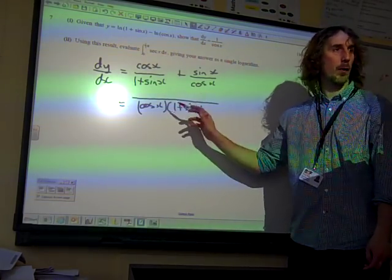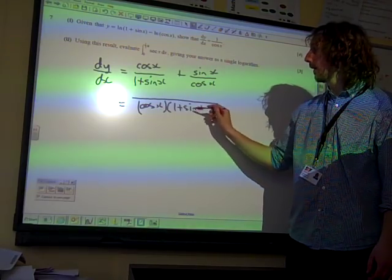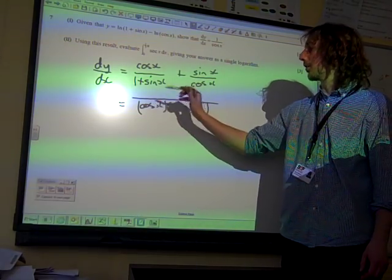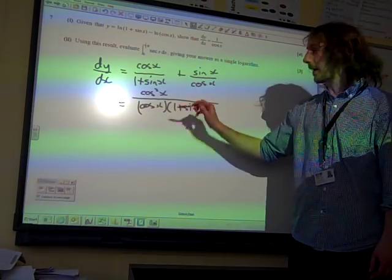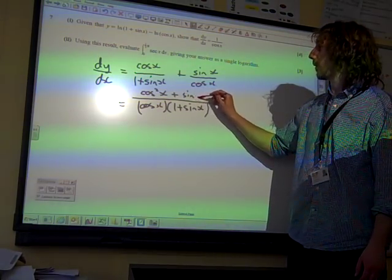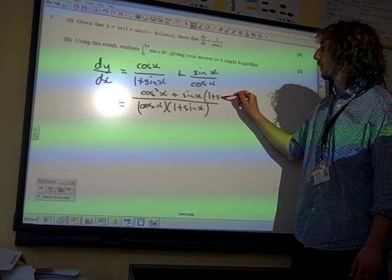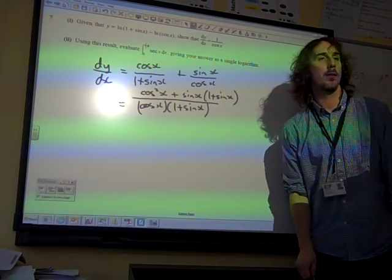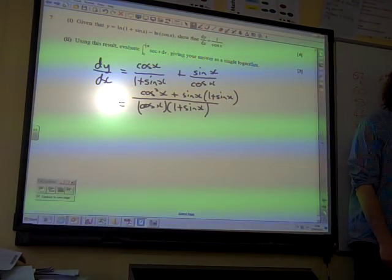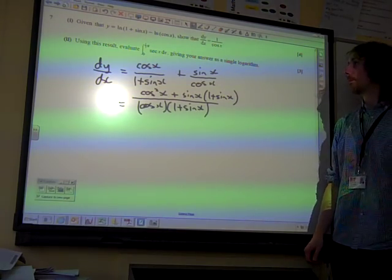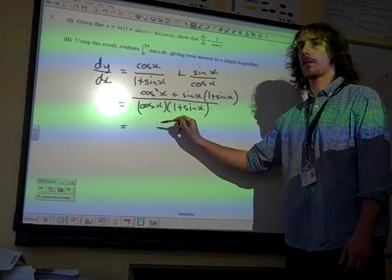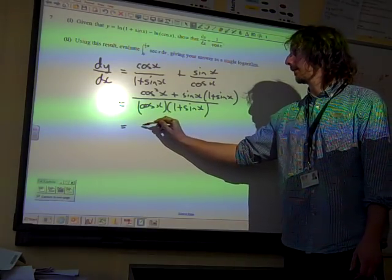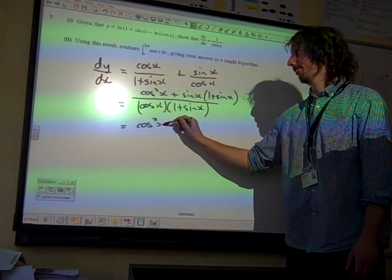If we put it together, we put it over a common denominator of cos x times 1 plus sine x. Our first fraction, therefore, we would need to have multiplied by cos x. So that's cos squared x. Our second fraction, we would need to have multiplied by 1 plus sine x. So that gives us that. If we work on what we've got here.